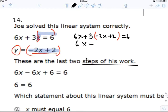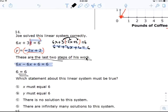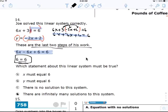These are the last two steps of his work. Joe solved this linear equation correctly. He solved it correctly. Notice that 6x plus 6x, these are the last two steps of his work. That's correct. What is this called? Which statement must be true? You know this one. It's D, right? It's easy enough.